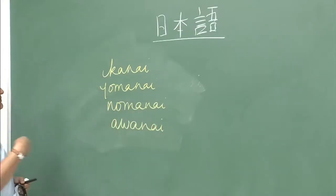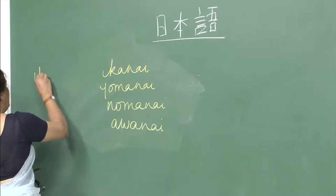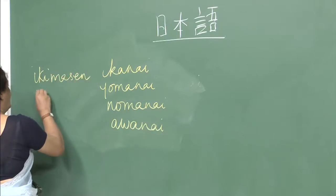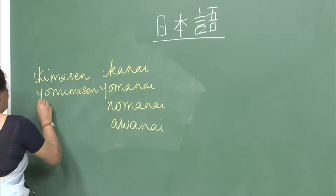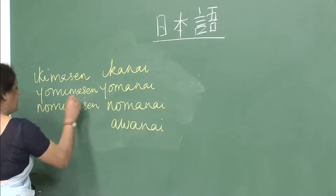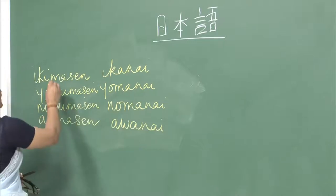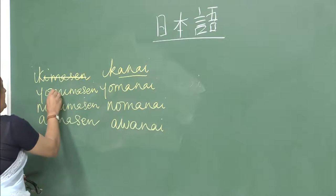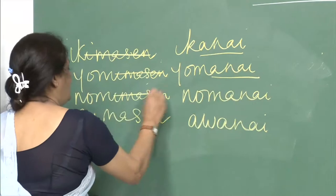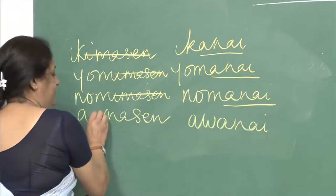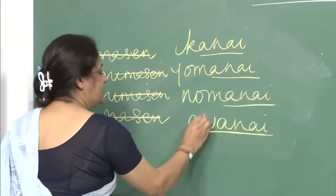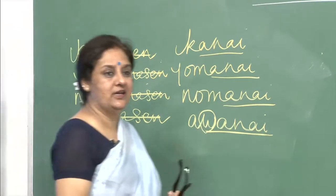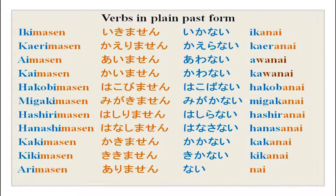How do you make these forms? All you need to do is remove the imasen and put anai. So ikimasen → ikanai, yomimasen → yomanai, nomimasen → nomanai, aimasen → awanai. Remove imasen and put anai. Note that aimasen becomes wanai — there are exceptions in group 1 which you must keep in mind when making the negative plain form.